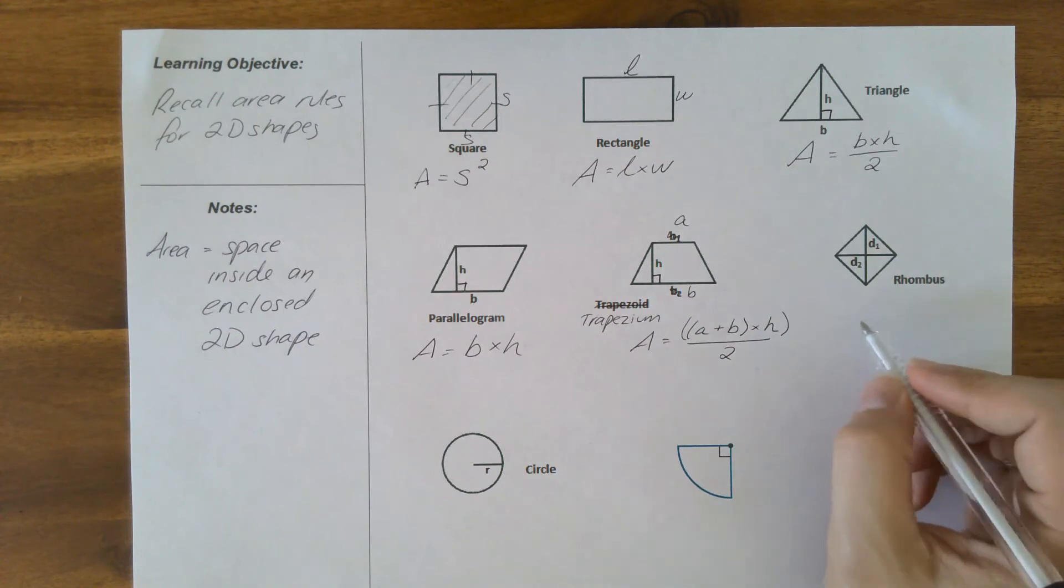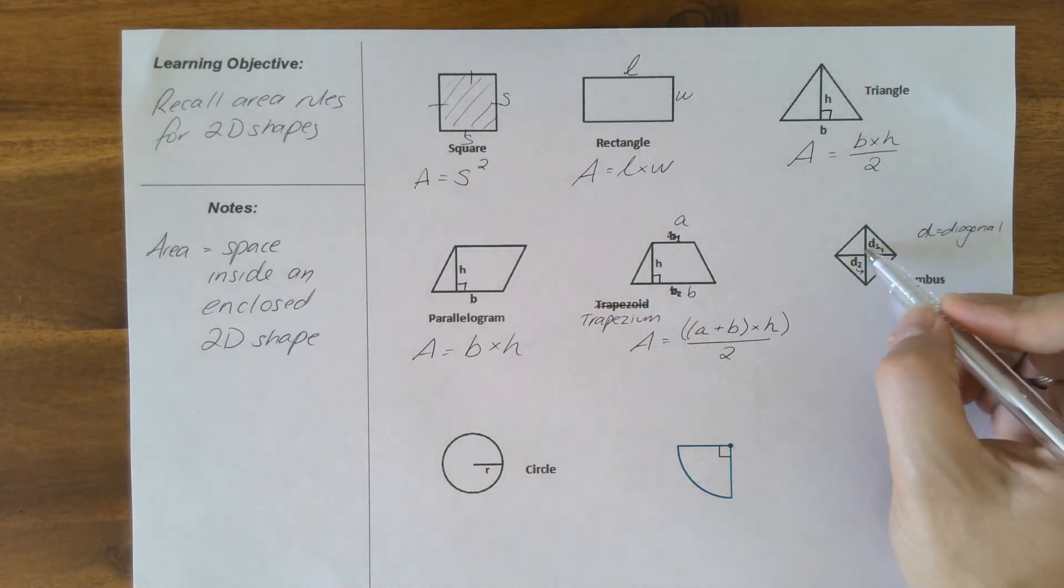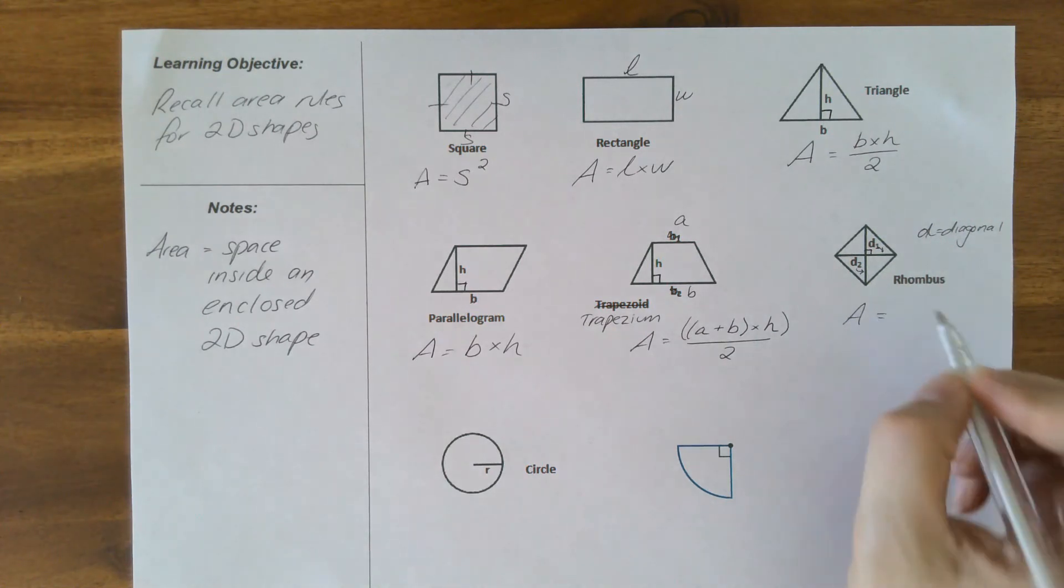Our rhombus has some interesting features. Our d's stand for diagonal, so d1 runs this way and d2 is that way. d for diagonal. These diagonals bisect each other at right angles, and our area of our rhombus are those diagonals: diagonal one times diagonal two divided by two in total.